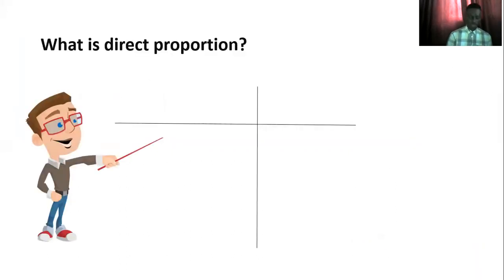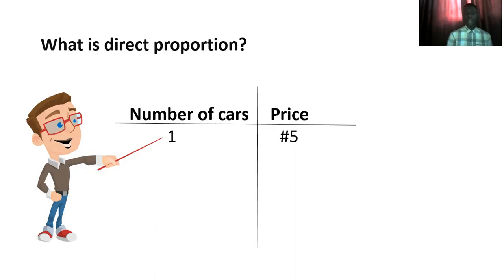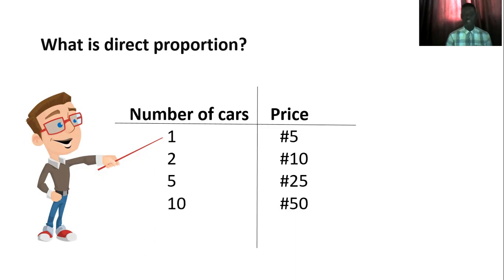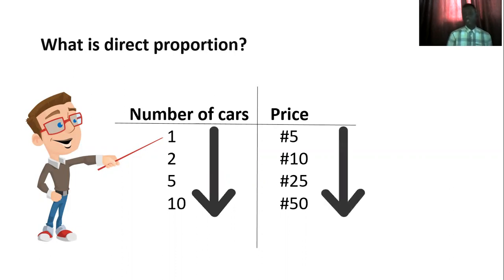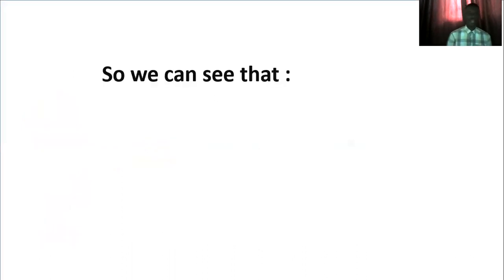What is direct proportion? I like to illustrate this definition with an analogy. Consider the number of cars and price: one car costs five naira, two such cars cost ten naira, three cost twenty-five naira, and ten such cars cost fifty naira. As you can see, the number of cars is increasing from one toward ten, and the price is also increasing. Direct proportion means that when something is increasing, it causes the other thing to also increase.